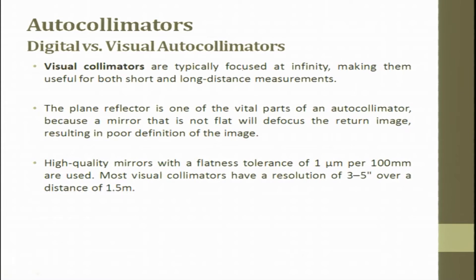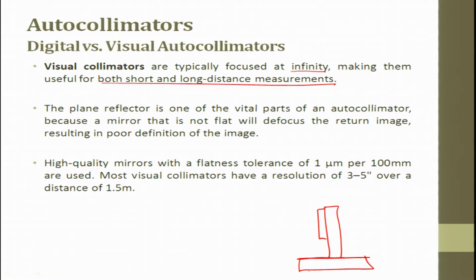The visual autocollimator is typically focused at infinity, making it useful for both short and long distance measurement. A plane reflector is one of the vital parts of an autocollimator. The mirror placed on the stand must be flat — a mirror that is not flat will defocus the returned image, resulting in poor definition. When using an autocollimator, the mirror surface has to be as flat as possible and of high precision, with a very tight flatness tolerance.